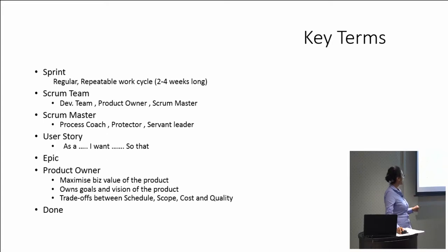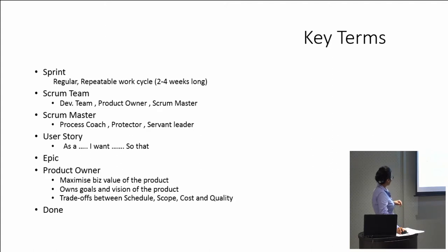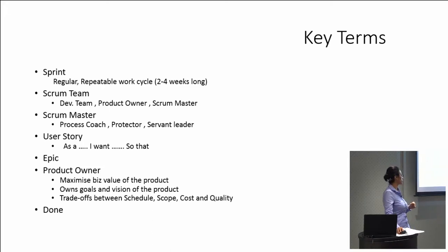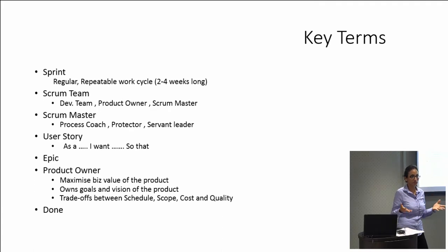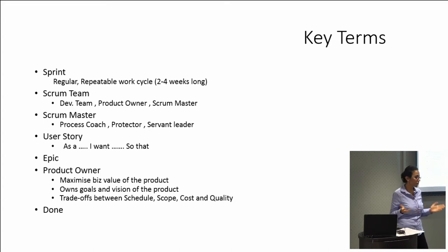The next term is epic. Epic is a big user story — something at a very high level that hasn't been thought through or refined. For example, 'I want a particular feature to be available on mobile.' The product owner's main responsibilities include maximizing the business value of the product, owning the goals and vision of the product, and deciding trade-offs between schedule, cost, and quality. The next key term is 'done' — the definition of done is given by the scrum team itself, defining when a sprint is considered successful.